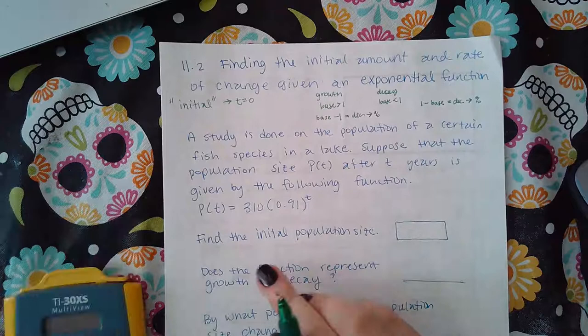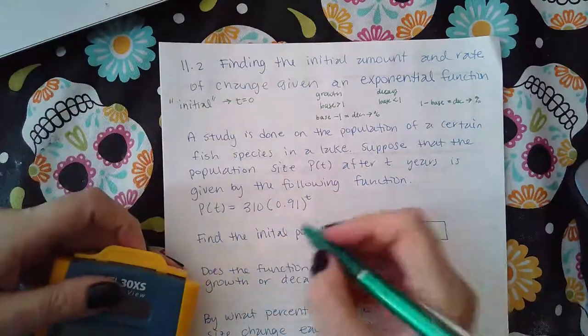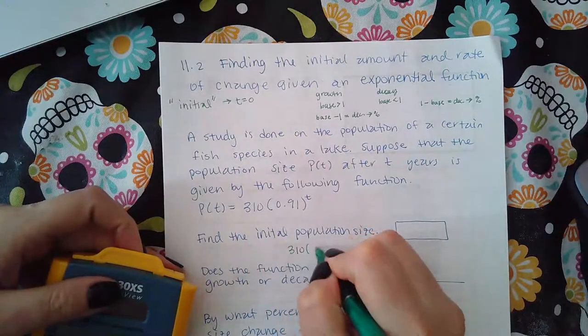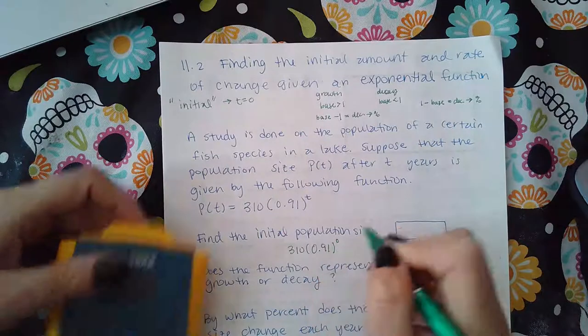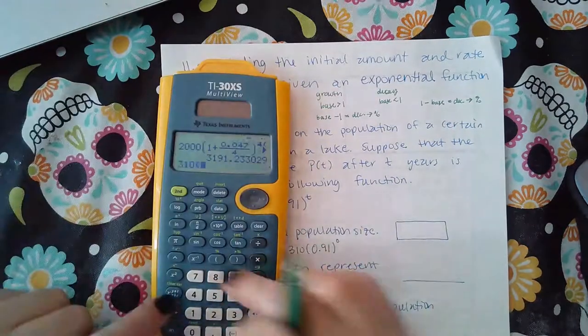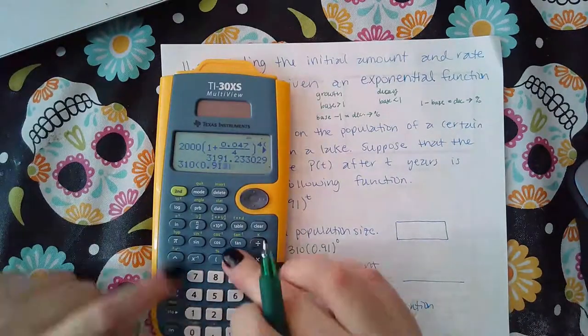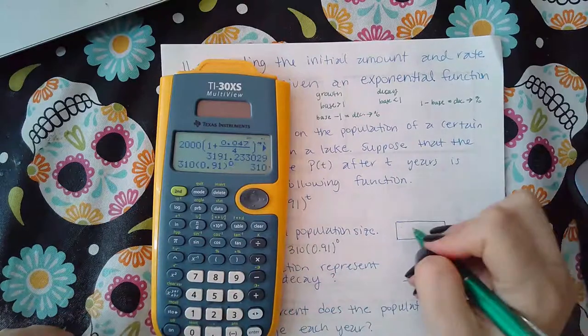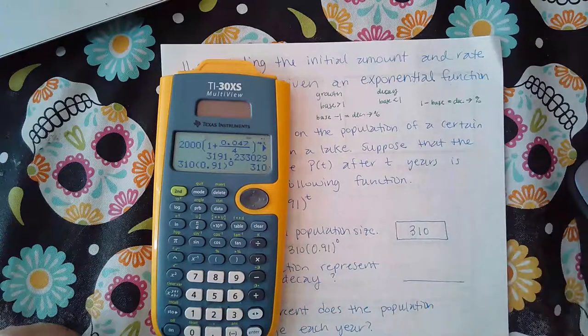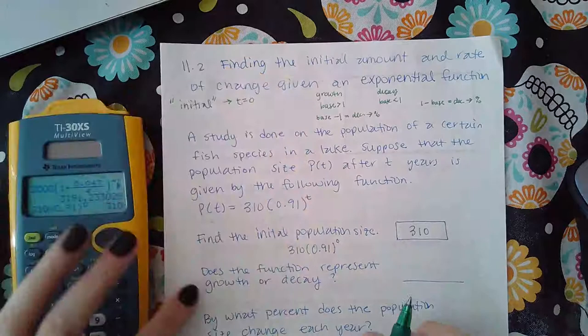So for mine, initial population size means I'm going to plug in zero for t. So then I get 310 times 0.91 raised to the power zero, I just get 310.